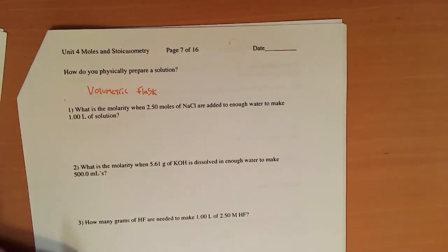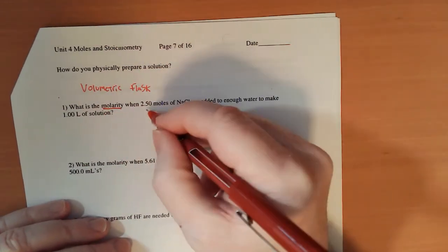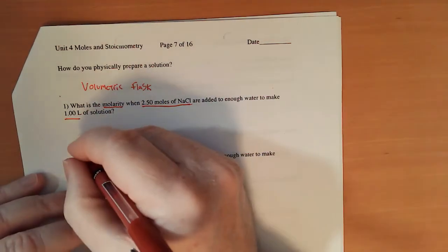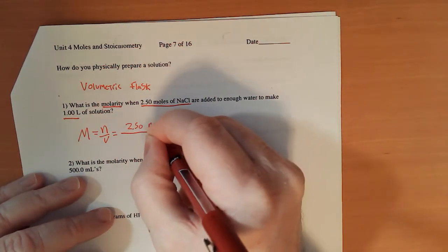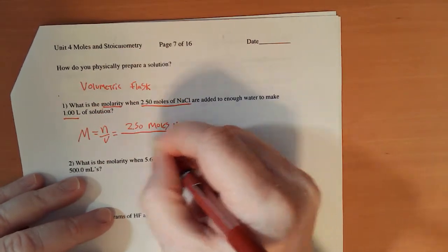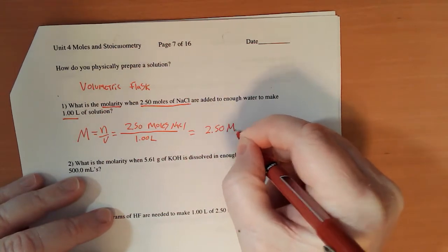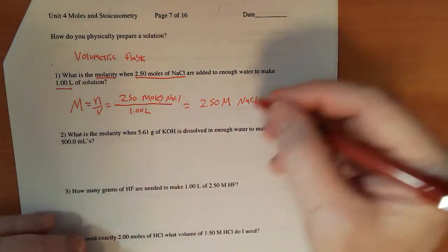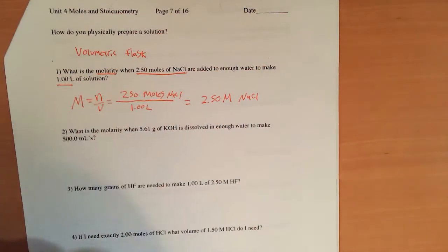So we're going to do some really just straightforward, simple math problems now involving molarity. In this first one, we're looking for molarity if we have 2.50 moles of NaCl and enough water to make 1 liter. So molarity equals moles over volume, which equals 2.50 moles of NaCl over 1.00 liters. And that comes out to be 2.50 molar NaCl. Now we pronounce that capital M as molar. And we pay attention to sig figs. 3 divided by 3, my answer is still going to have 3.